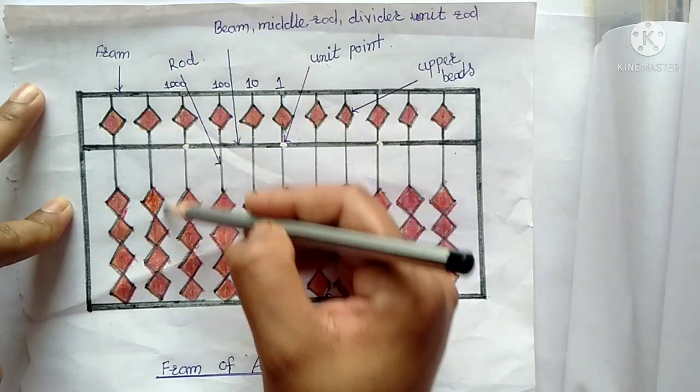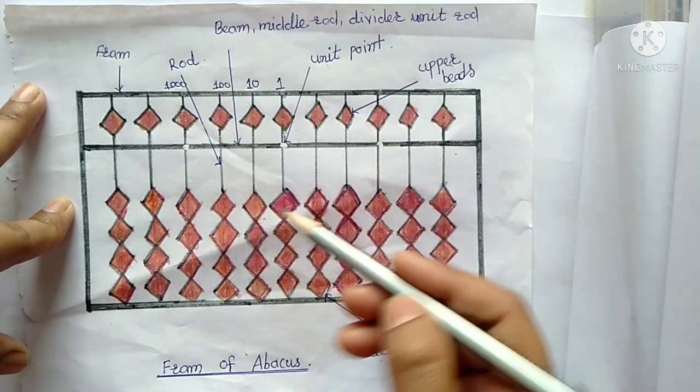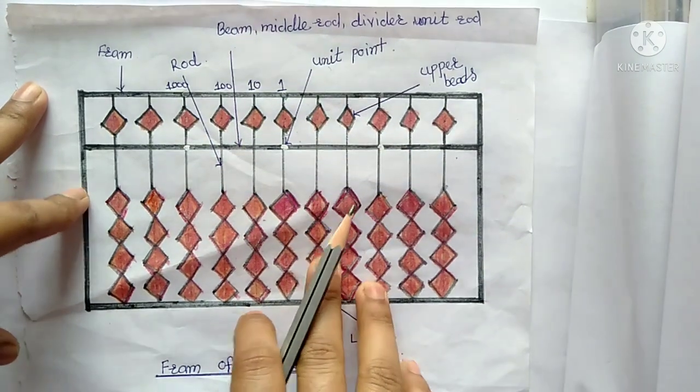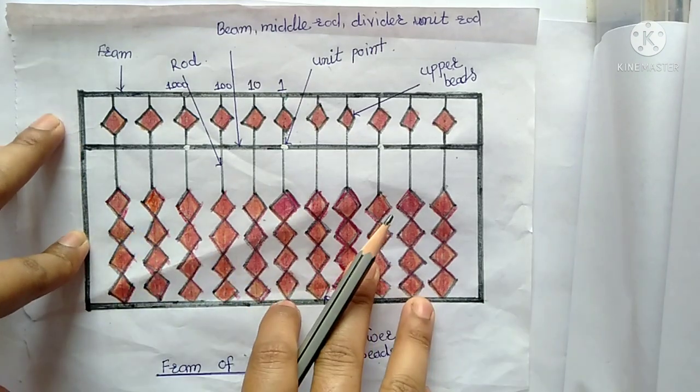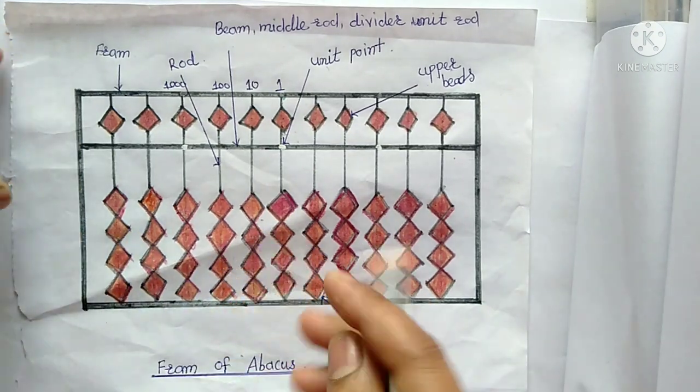The vertical line we can see here that is called as rod. In this abacus figure there are 11 rods. Different abacus have different rods.